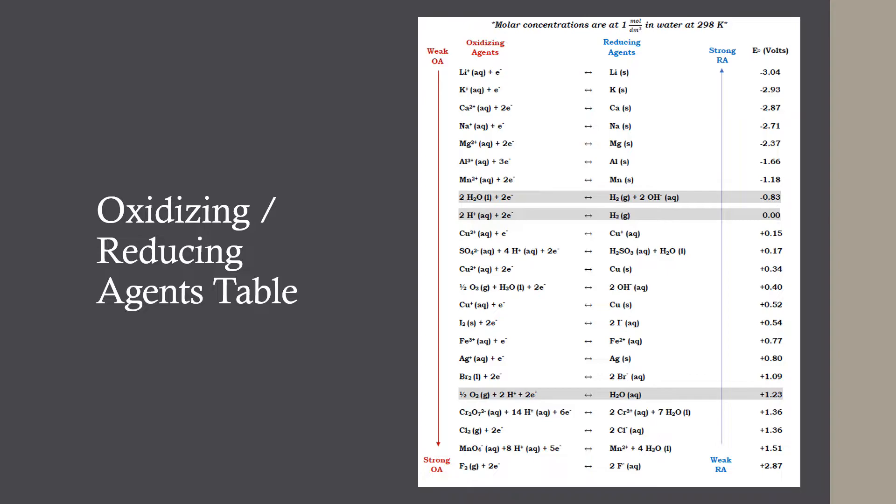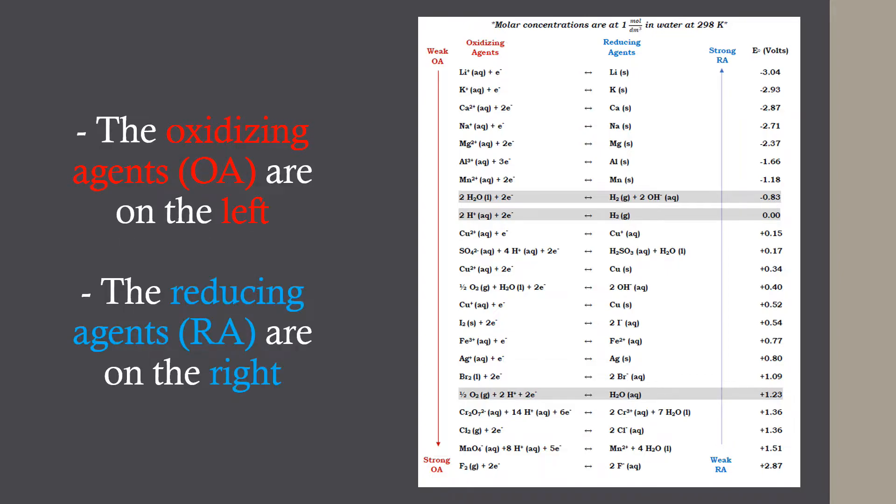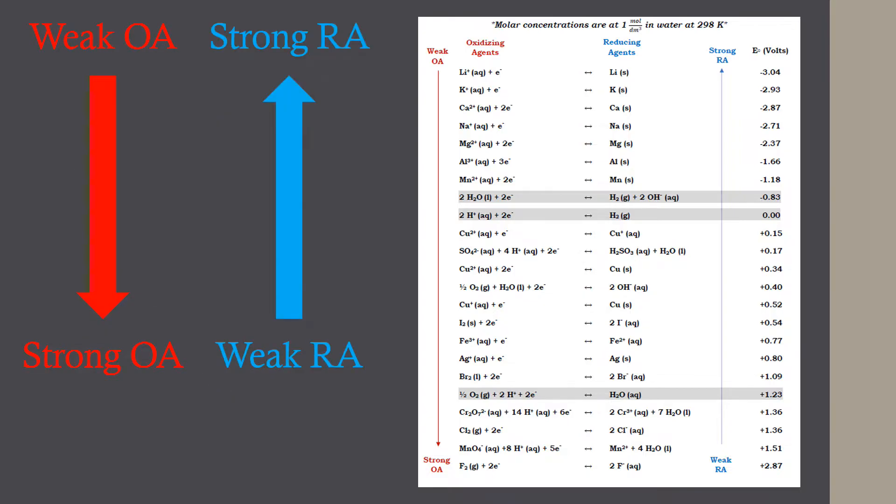Here is a table that shows most of the common oxidizing and reducing agents. Within this table, the oxidizing agents are on the left side, while the reducing agents are on the right side. In terms of strength, oxidizing agents get stronger as you go down the table, while reducing agents get stronger as you go up the table.